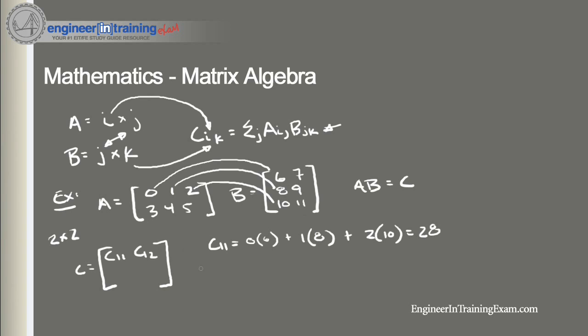Now how about c_12? What do you think we do for c_12? Well, we work across again row one, but now we work down column two because we're looking for the element in column two. So we go 0 times 7 plus 1 times 9 plus 2 times 11, which is equal to 31.